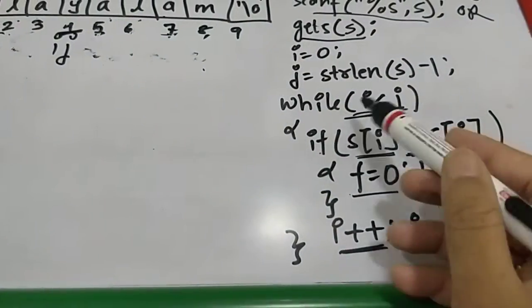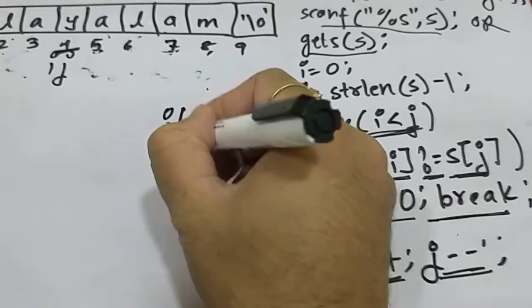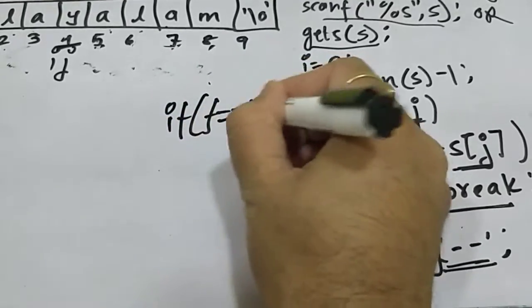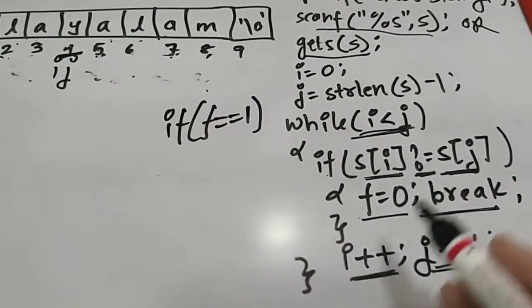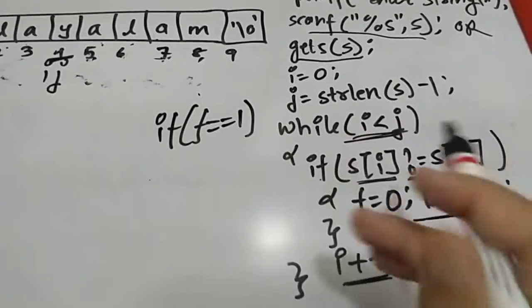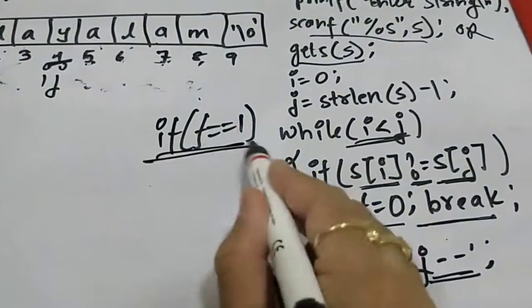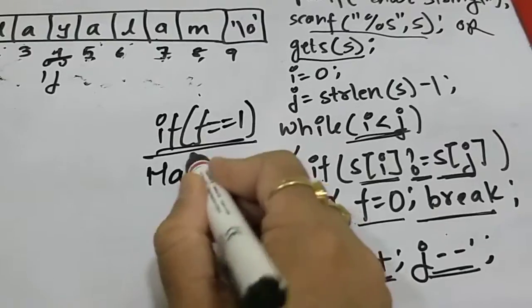i and j both are at position four. Condition will be checked, i less than j? No, because it is four here. So i less than j true nahi hoga, loop break hoke bahar jayega. So after the loop, what will we check? If f equal to equal to one remains throughout my loop, after this while loop if value of f remains one, it means it is palindrome.